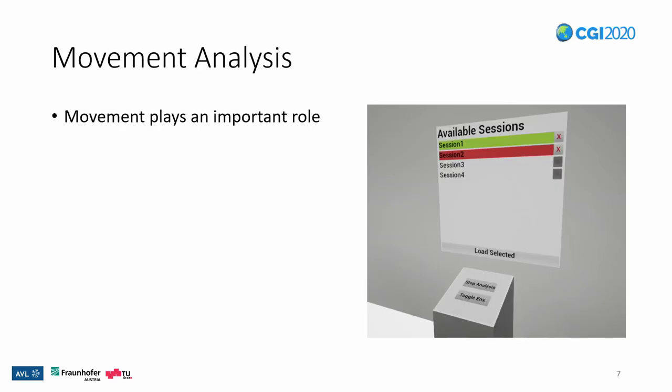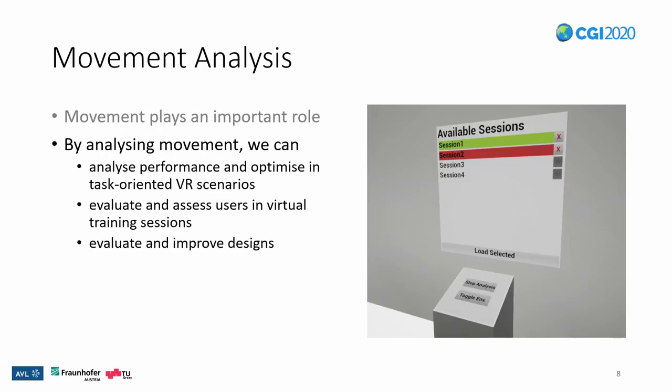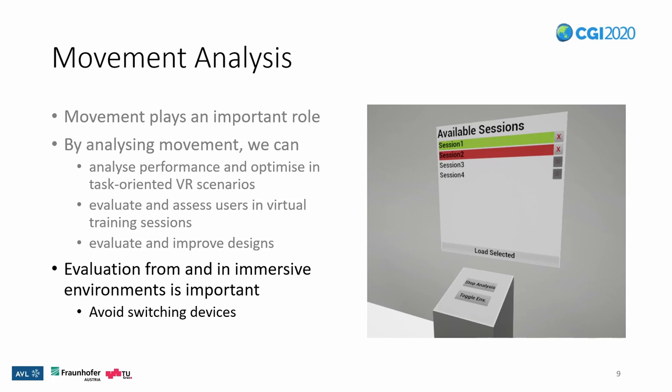In the aforementioned applications, movement plays a vital role. Analyzing movement in VR allows us to analyze and optimize performance in task-oriented VR scenarios, but it also lets us evaluate and assess virtual simulation or training sessions. By doing these analyses, design decisions can also be evaluated and improved. For an assembly, for example, designers can simulate the assembly over multiple sessions and try to improve the workflow by comparing their movement.